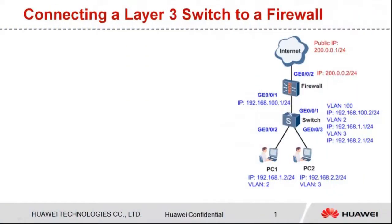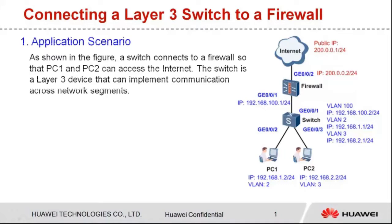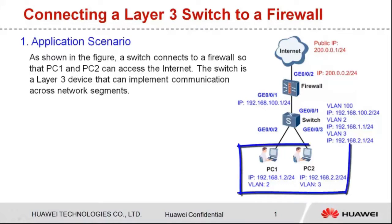Hi everyone! I'd like to show you how to configure a layer 3 switch and a firewall when PCs access the internet through the layer 3 switch and firewall. As shown in the figure, PC1 and PC2 access the internet through a switch and a firewall.